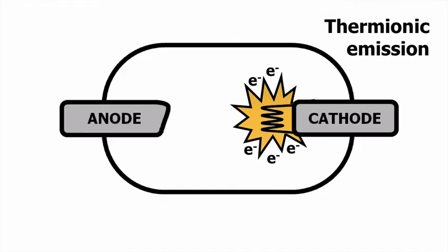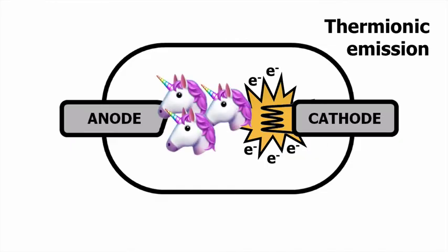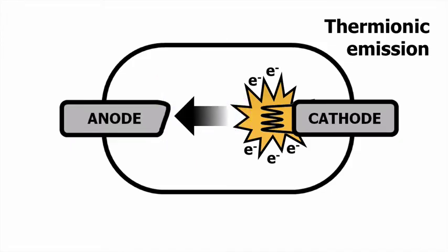A cloud of electrons doesn't do us much good. So what happens next? That's where the unicorns come in. Not really, but the second step of x-ray production is accelerating these electrons, which gives them extremely high kinetic energy. This is accomplished by an electric voltage that we call kilovoltage potential, or better known as KVP.